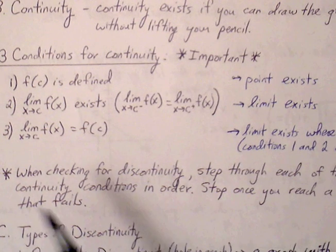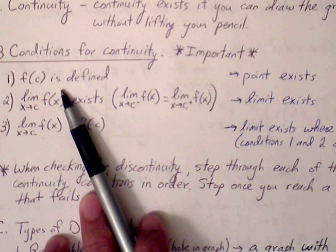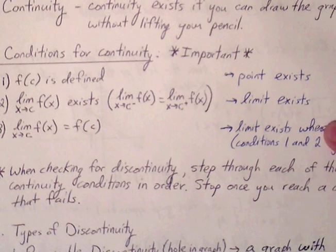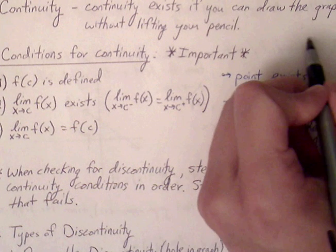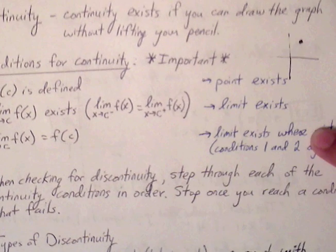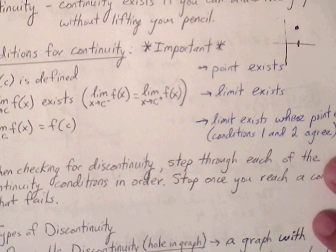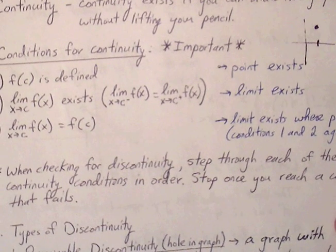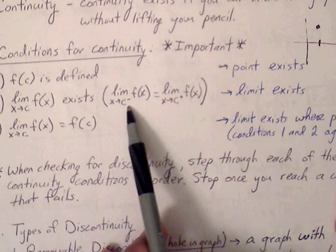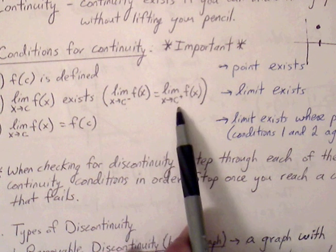The first condition for continuity is that f is defined — the ordered pair must exist on the graph at x equals c. The second condition is that the limit exists: as we approach c from the left, the graph must approach the same y value as when we approach from the right.